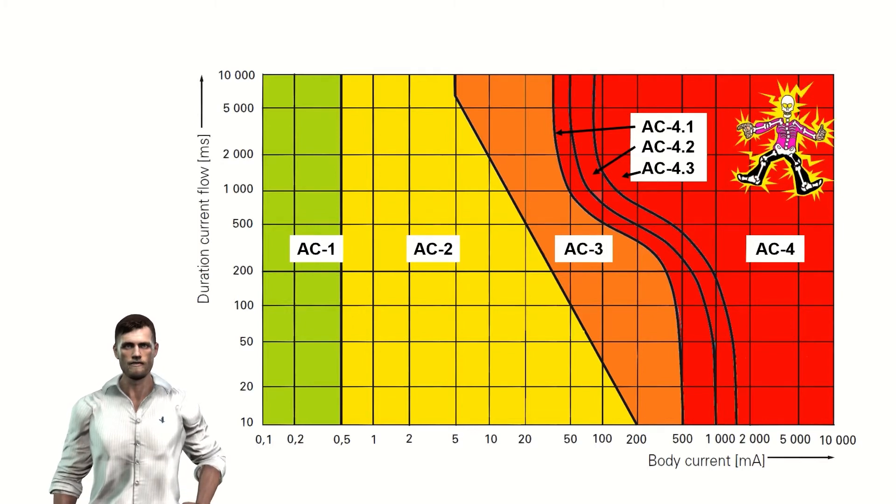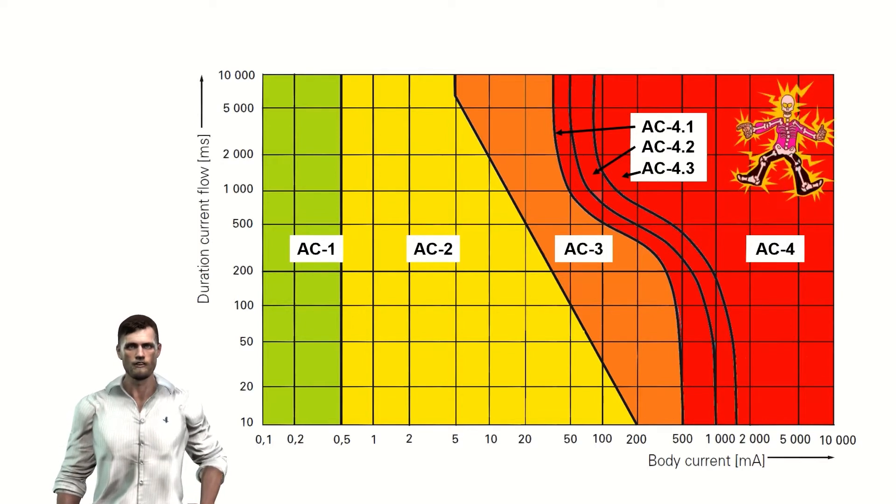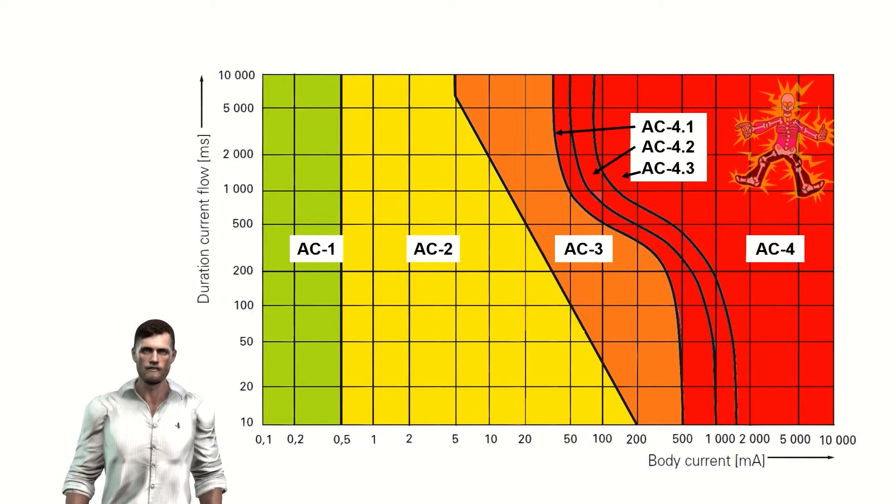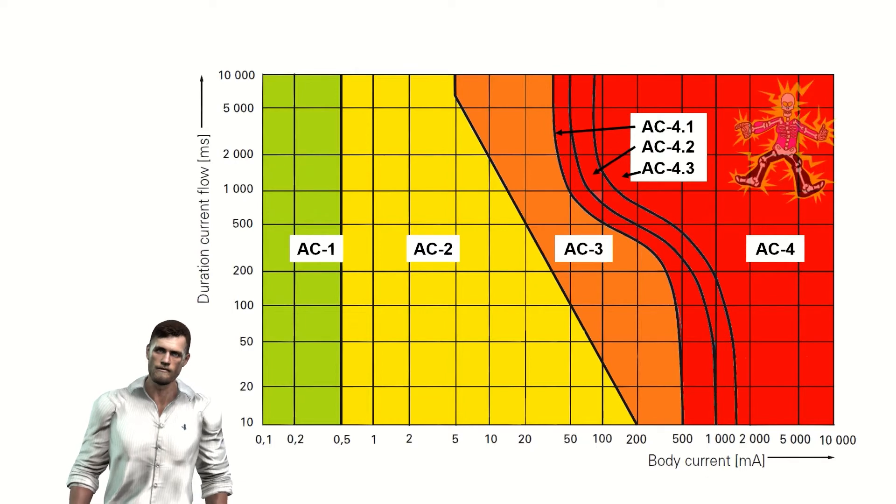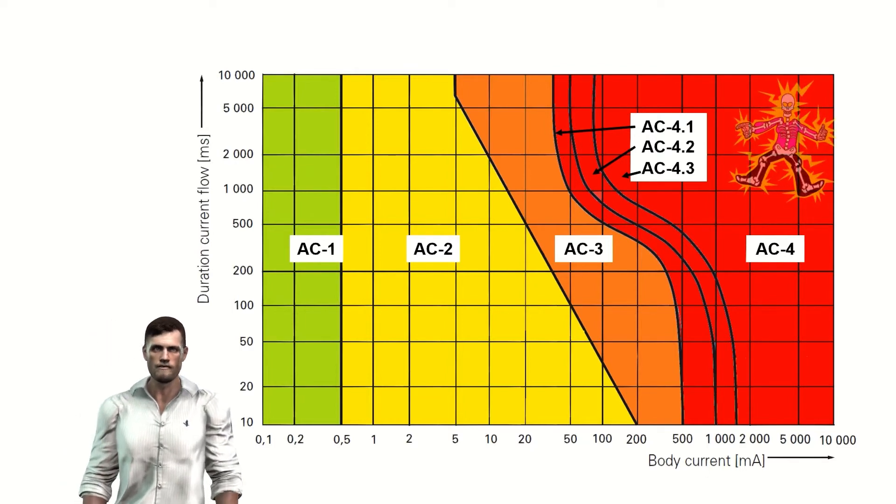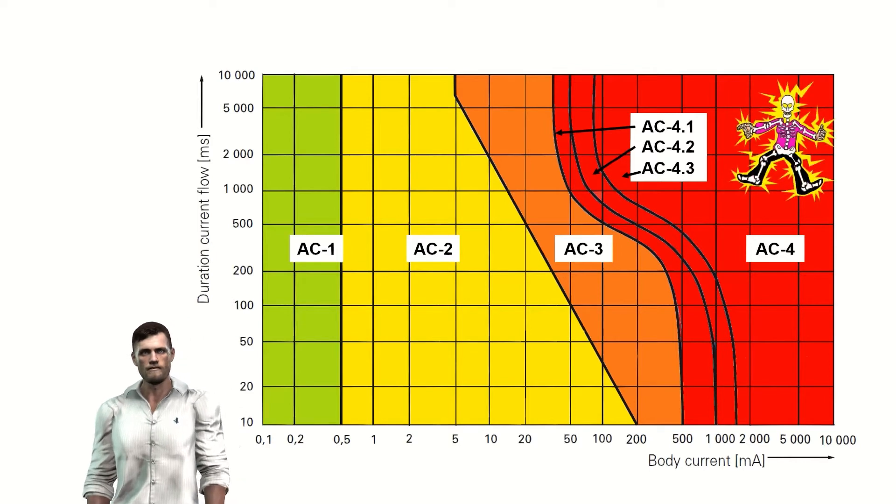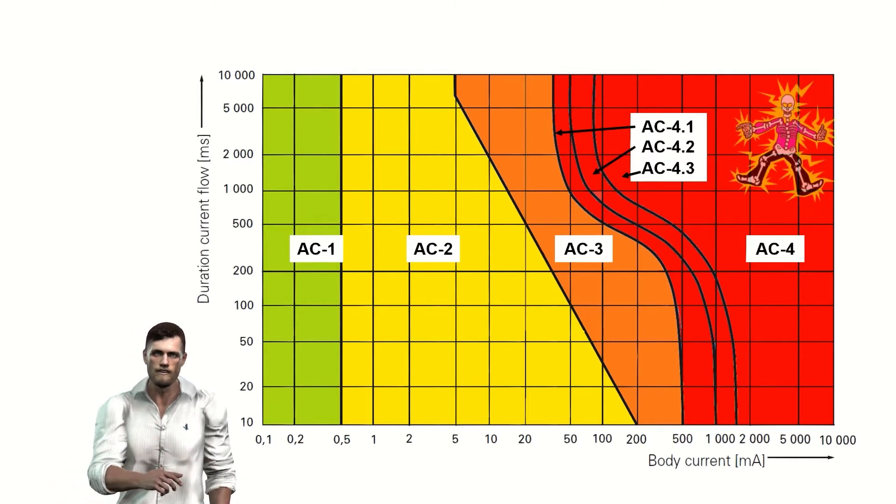In zone AC1, the effect of the current is practically imperceptible. In the AC2 zone, the passage of the current would already begin to be perceptible. In zone AC3, we would already have muscular contractions but the effects, in principle, would continue to be reversible in most cases.